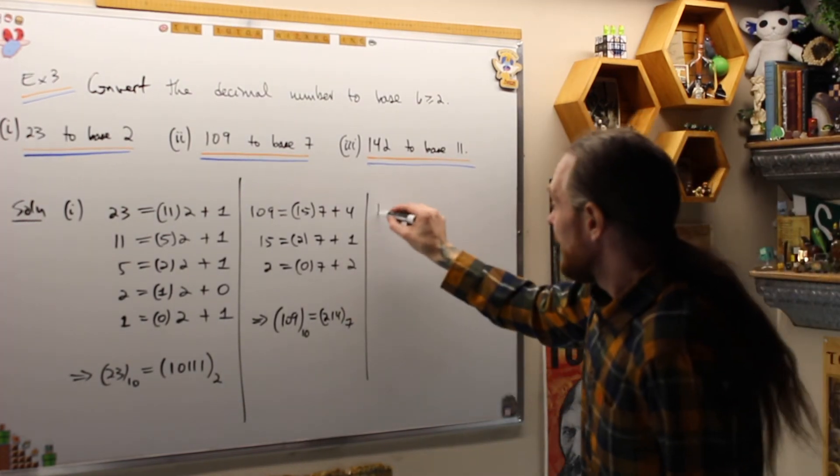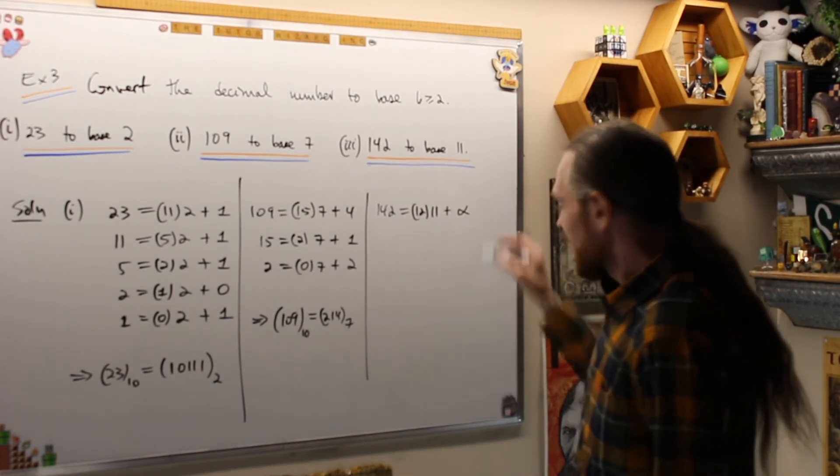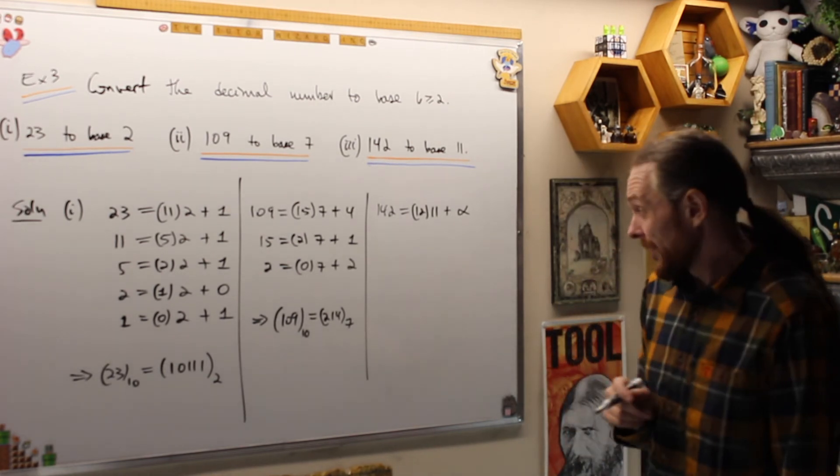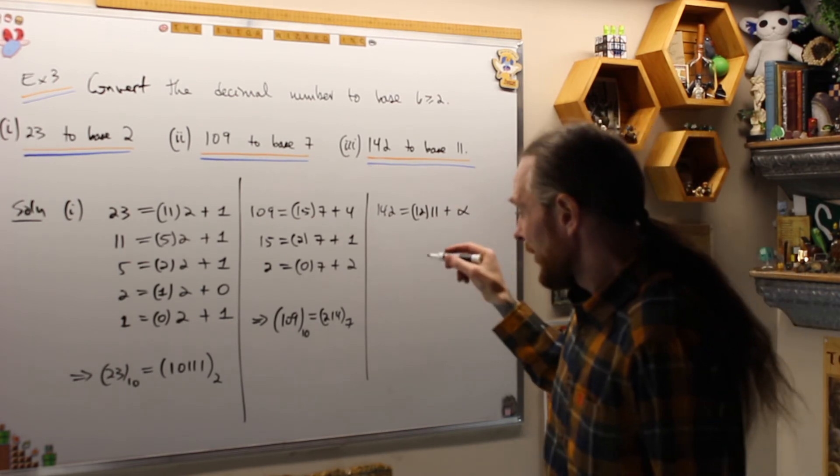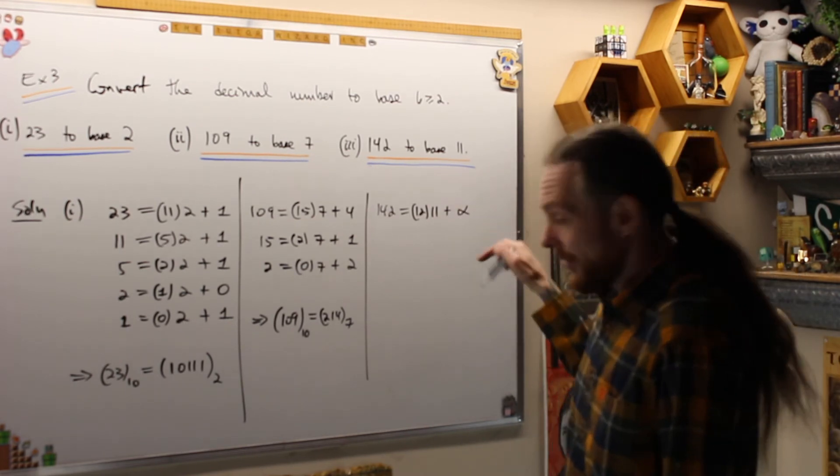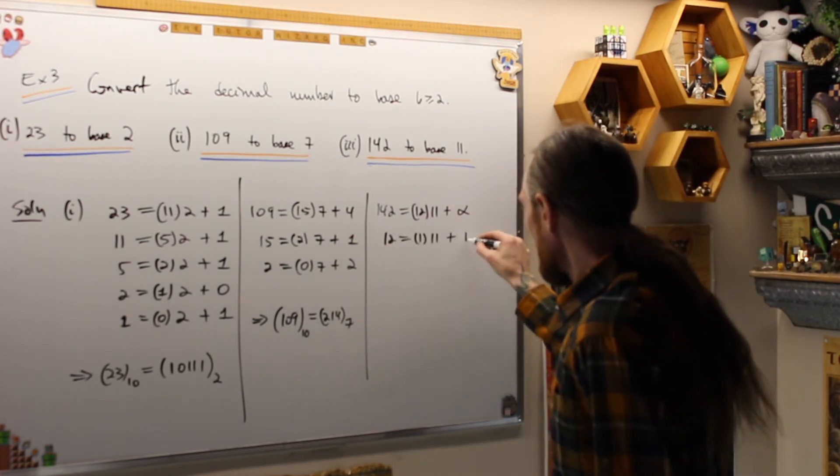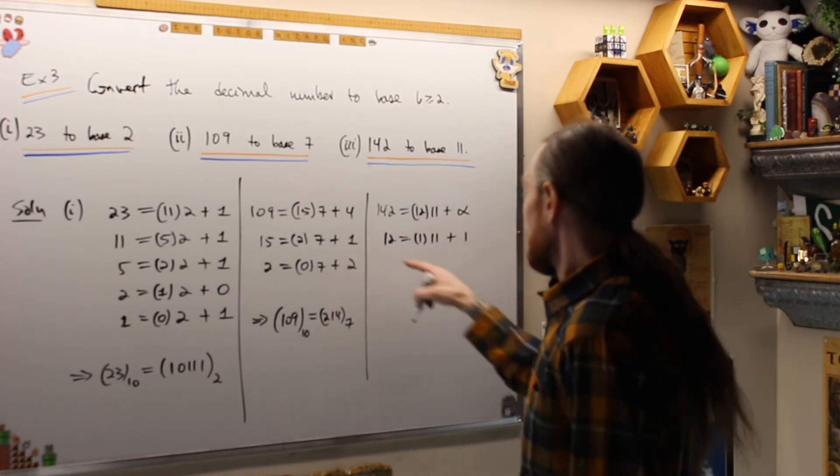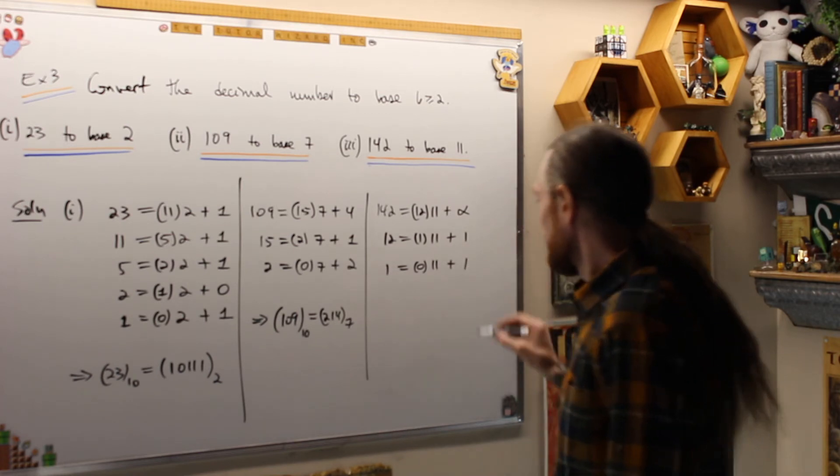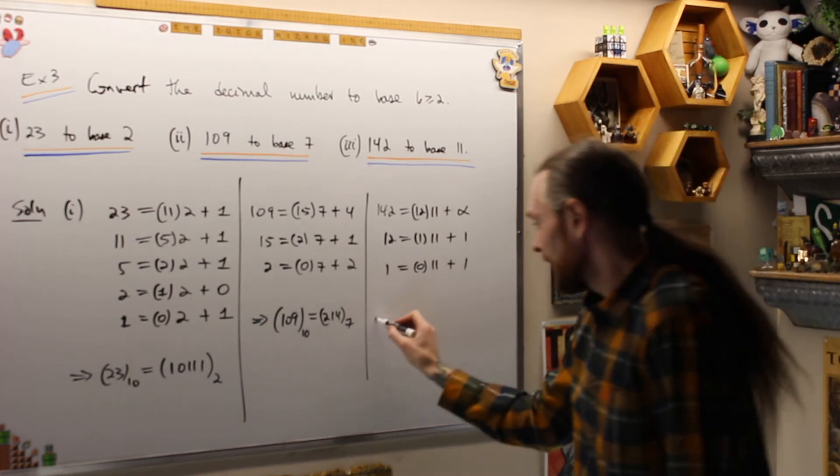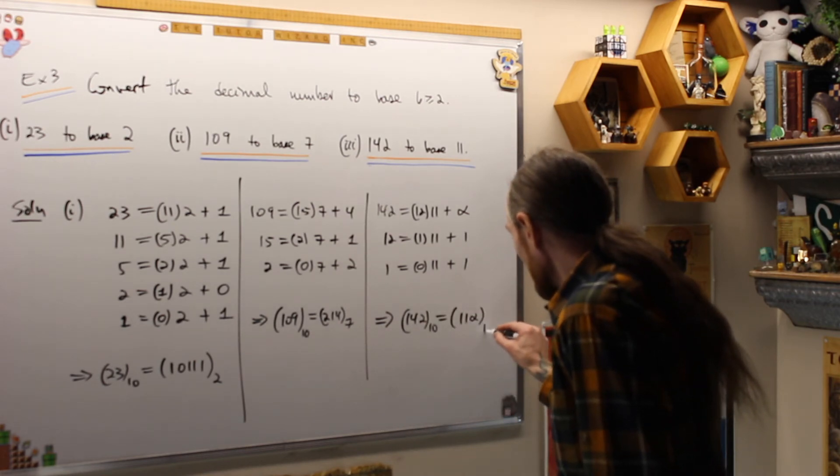For the last one, 142 is going to be 12 times 11 plus 10, which has to be written as an alpha now, not 10. And I look at this and I say, you can leave it like that, but you have to convert it at the end and remember that it has to be 10 as an alpha. And we have 12 is equal to 1 group of 11 plus 1, and 1 is equal to 0 groups of 11 plus 1.